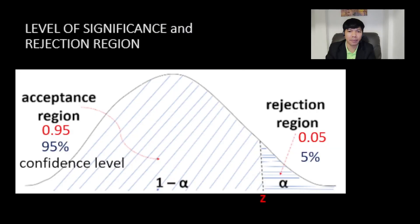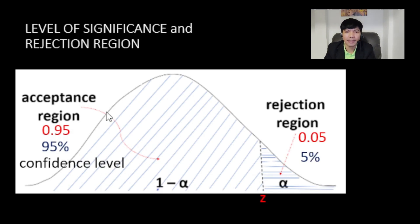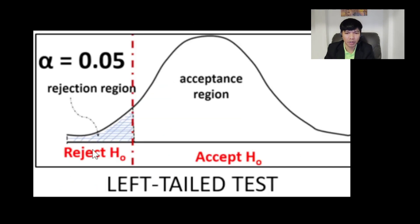Let's have a brief recap on when to reject and accept the null hypothesis. If the level of significance is 5%, the rejection region is 0.05. The fail-to-reject region, also known as the confidence level, must be 95%, or 0.95. This means the probability that an observation falls in the rejection region is 0.05 — that is the probability that you will incorrectly reject the null hypothesis. Keep in mind that the rejection region can be at the left tail, the right tail, or both ends of the normal curve.